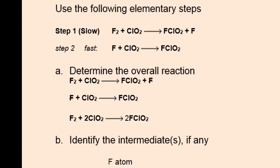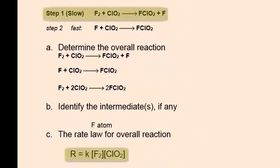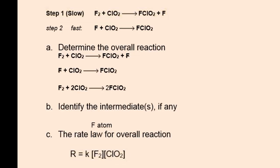The reaction intermediate is the fluorine atom, because it cancels out when adding the elementary steps. The rate law is dependent on the slow step — it is simply the reactants of the slow step, with the exponent on each reactant equal to its stoichiometric coefficient. In this case, there's a one in front of the fluorine and the ClO2, so the rate law is R = K[F2]^1[ClO2]^1.